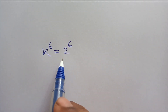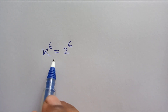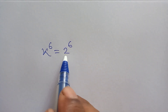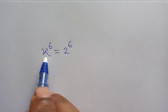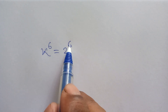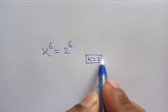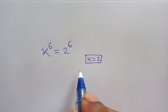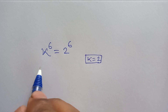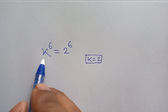Hi everyone, welcome. We have a very interesting exponent problem. In this video I am going to show how to find the value of k correctly. We know that when both sides have the same power, we get base equal to base. So here, since powers are the same, we get k is equal to 2. That is the simple value of this equation, but I will show a more complex way, which is very interesting.